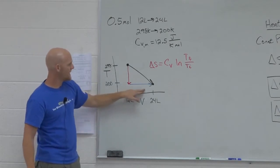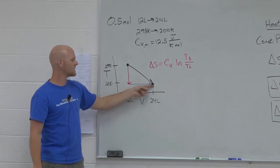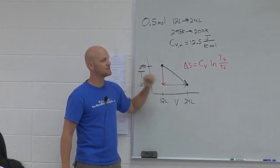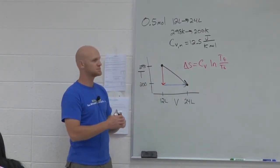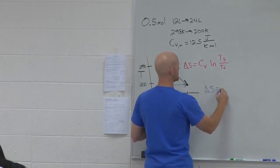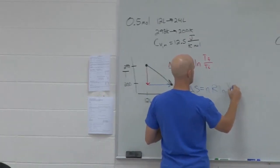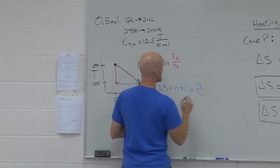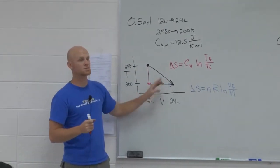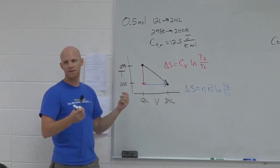Now, for the second part — expanding the gas reversibly and isothermally at constant temperature — that's the expression we had earlier, where delta S equals nR ln of V final over V initial. Notice that rather than giving you volumes, I could have given you pressures as well; we would use the alternate expression with ln of P initial over P final instead.